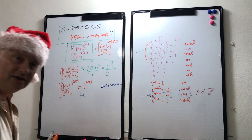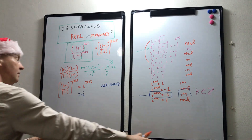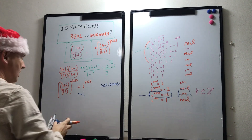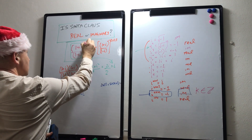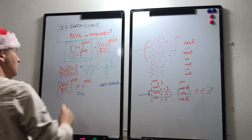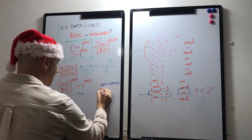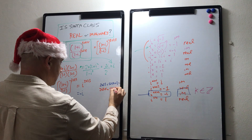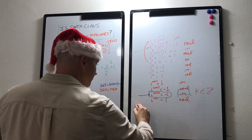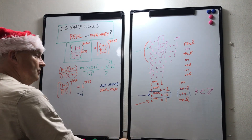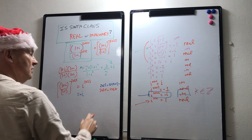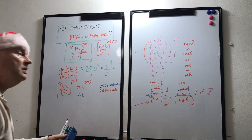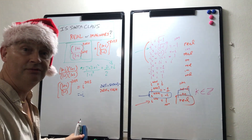The good news is that next year we will be evaluating (1 + i)^2024 over (1 - i)^2024. Now 2024 can be written as 4(506), which is of the form 4k, and so therefore i^2024 equals 1, which is real. So in 2024, Santa Claus is real!